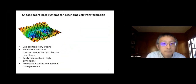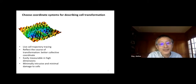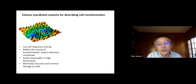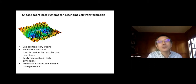To study cell phenotype transitions, we need a mathematical representation — we need to describe what the coordinate is. We want to use time-lapse imaging to trace individual cells. We need to choose the right coordinate that can reflect the course of transformation and should be easily measurable. We are talking about live cells, and the transition process happens over days to weeks, so we need continuous imaging with minimal intrusion and minimal damage to cells.